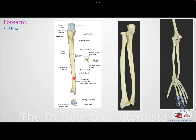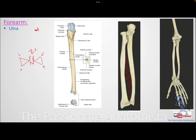Now let's talk about the shaft and distal end of the ulna and radius. If you take a cross section of both bones, you will find they are triangular in shape, meaning they have three borders. One border faces the other bone, and the border that faces the other is what forms the interosseous membrane — 'inter' meaning between, 'osseous' meaning bones in Latin. This syndesmosis or fibrous connective tissue connecting them is called the interosseous membrane, and the sharp border facing the other bone is called the interosseous border.